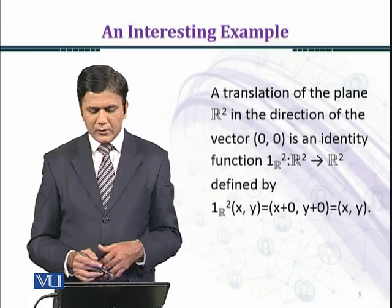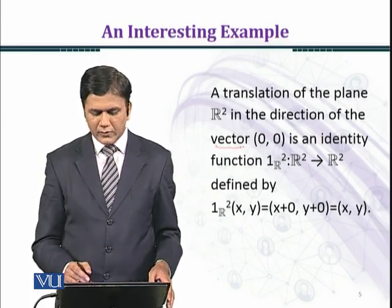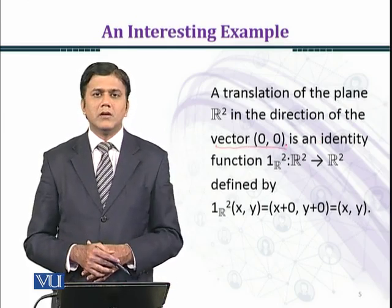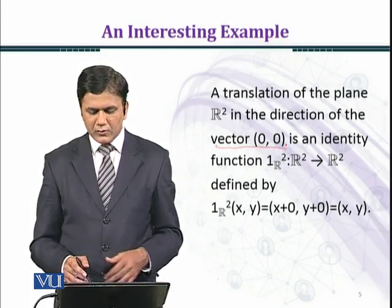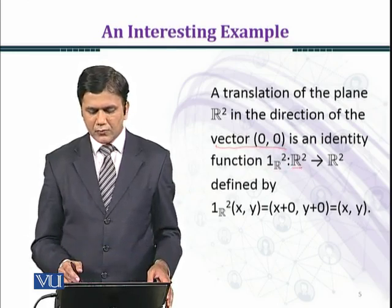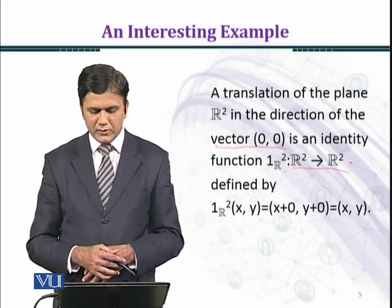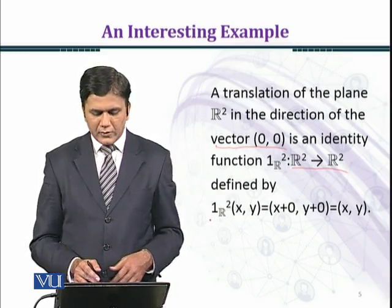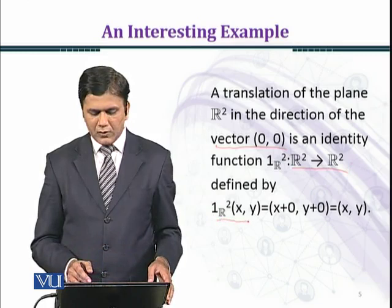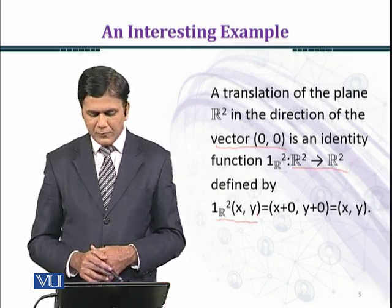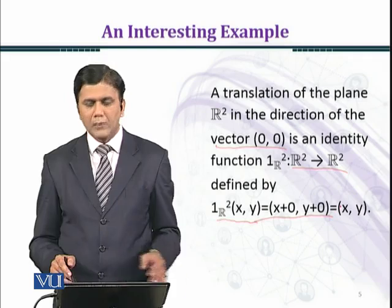A translation of the plane R² in the direction of the vector (0, 0) is an identity function 1_{R²}: R² → R² defined by 1_{R²}(x, y) = (x + 0, y + 0) = (x, y).